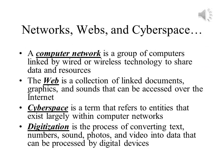Before we can continue, we need to define a few terms. A computer network is a group of computers linked by wired or wireless technology so its data and resources can be shared. These resources include not just data, but printers and other devices — it can even include access to other networks.